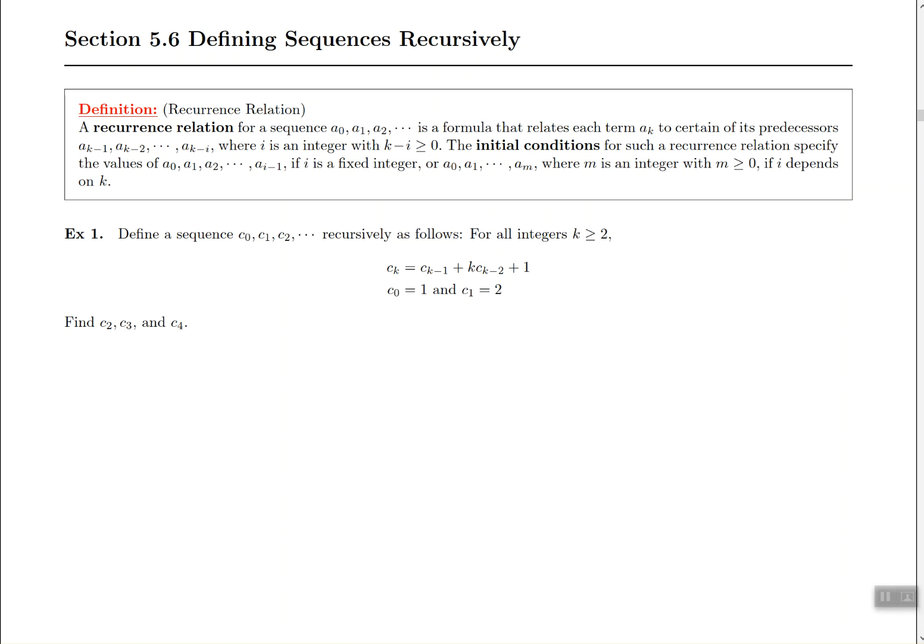Let's start with example 1 which says define a sequence C0, C1, C2 recursively as follows. They're giving us two formulas to define a sequence. The first formula involves the relationship between the terms, and the second gives us information about the first and second term - the first order, the zeroeth term.